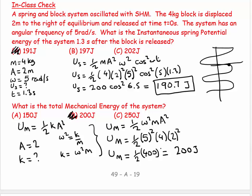So at all times this oscillator has 200 joules of total mechanical energy. It switches between having 200 joules of kinetic energy and no spring potential energy, and having 200 joules of spring potential energy and no kinetic energy. It's encouraging that the instantaneous potential energy of 191 joules is indeed less than the total mechanical energy of 200 joules.